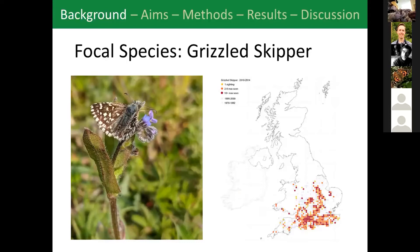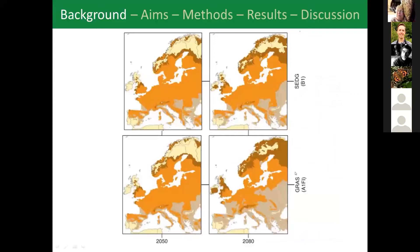It's of particular concern because since 1976 it's undergone declines in occurrence of over 50 percent and declines in abundance of 37 percent and it's now a priority species. But there was a ray of hope for the grizzled skipper and we thought because it's warm preferring it might be able to take advantage of the conditions getting warmer.